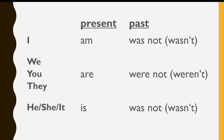Now let's look at the negative form of past simple. I was not, or I wasn't. You were not, we were not, they were not, or we weren't, you weren't, they weren't.